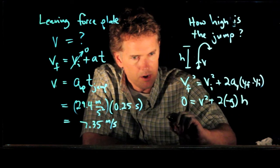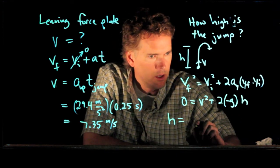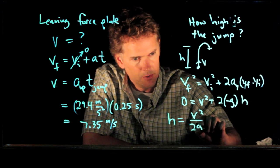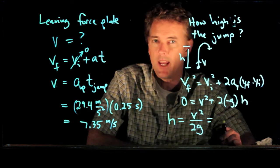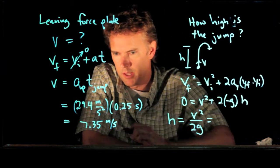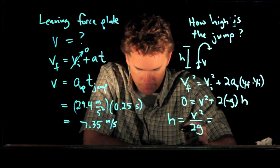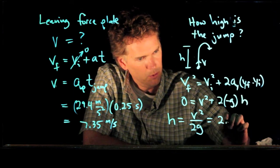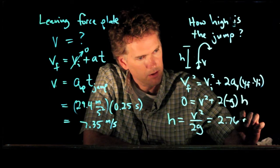And now, look, you can solve this very quickly for h. Which we get h is equal to V squared over 2g. And now you know all those numbers. V is right there, g is of course 9.8. And if you double check those numbers yourself, you should get 2.76 meters.